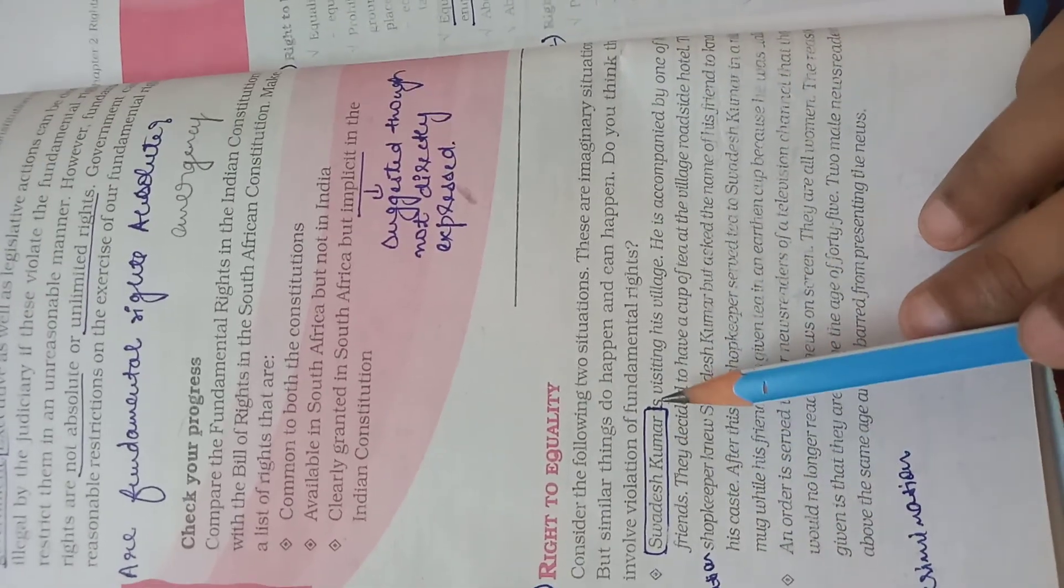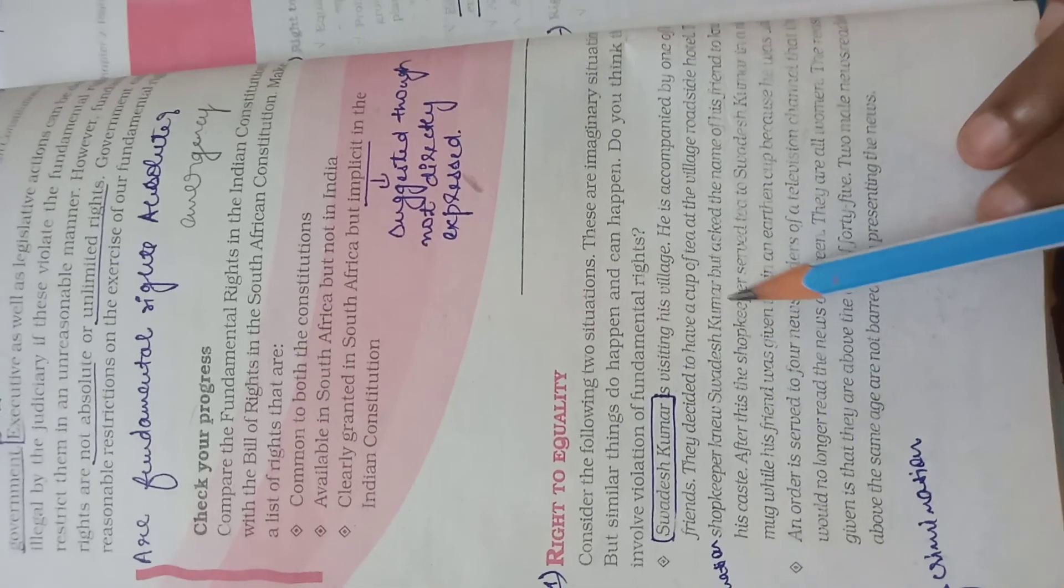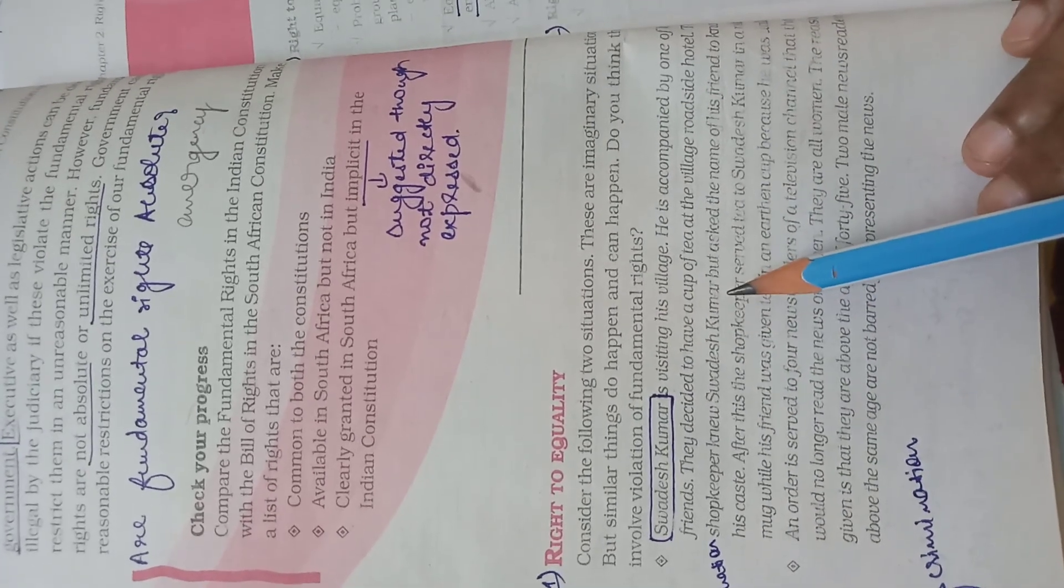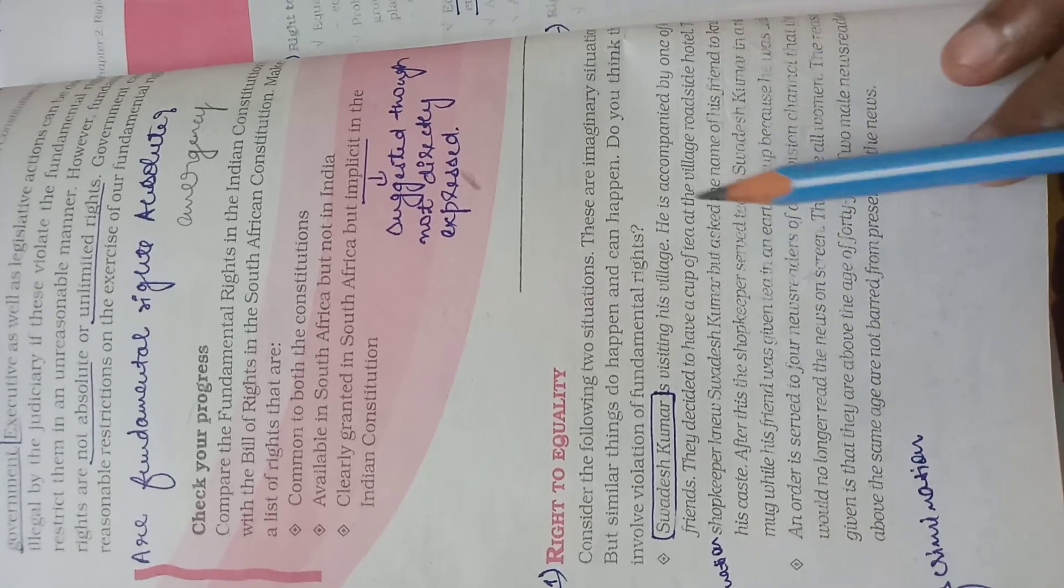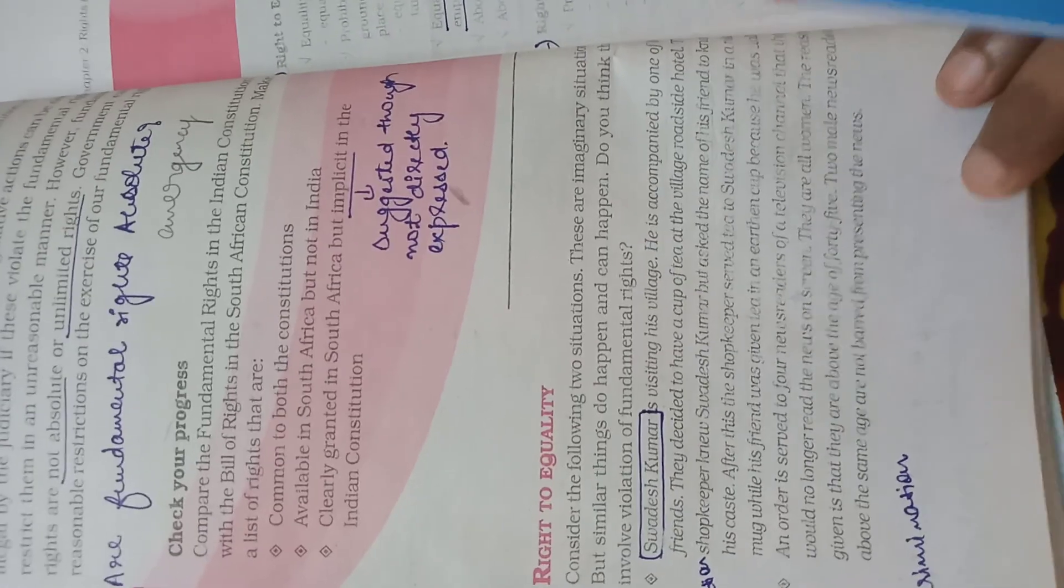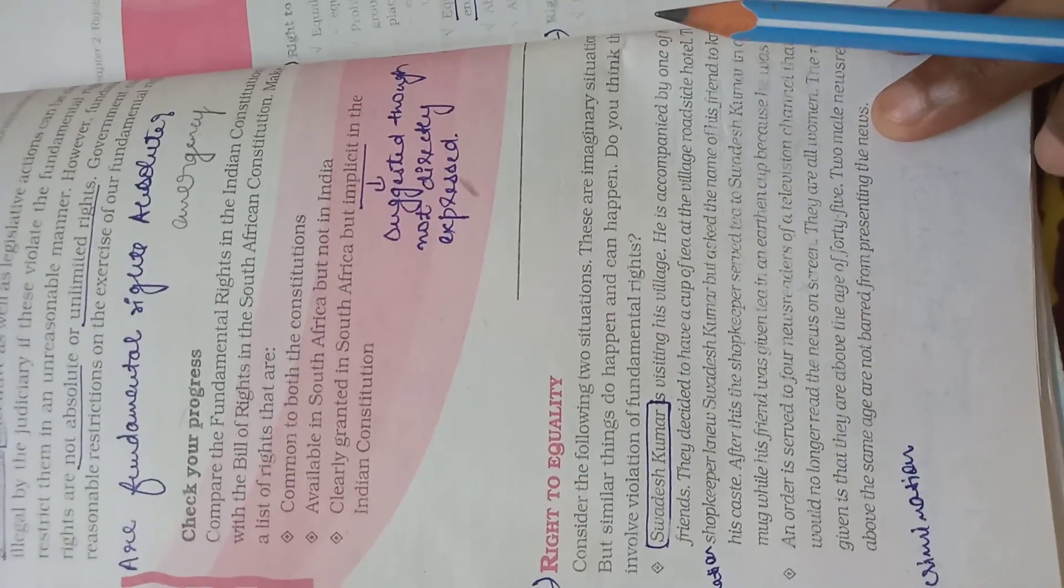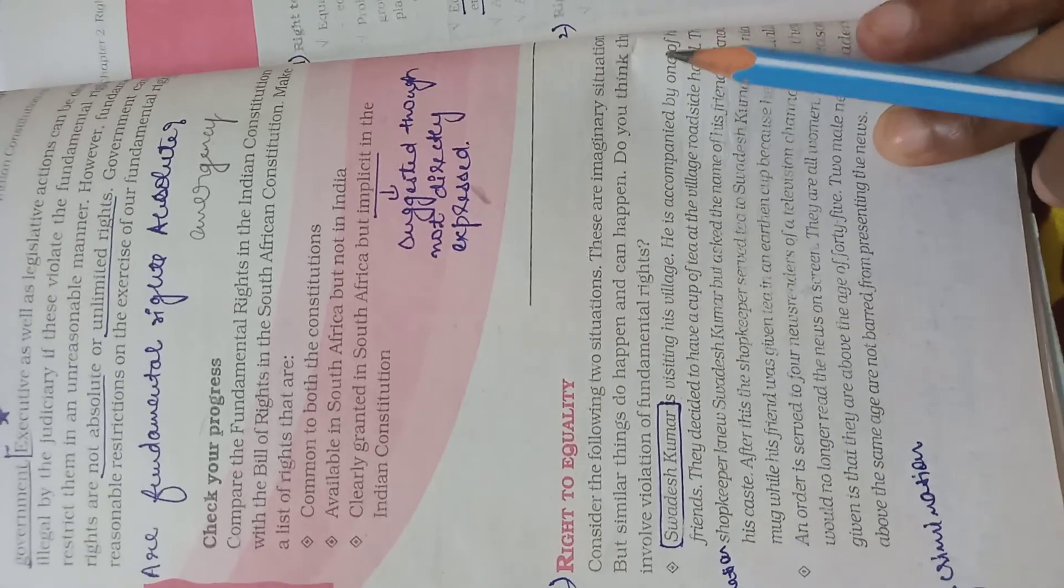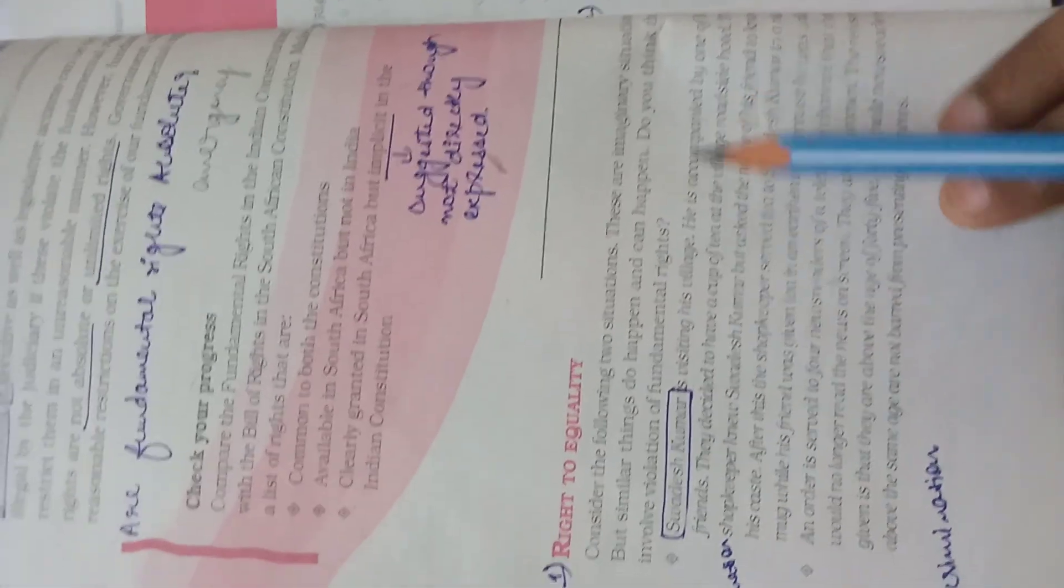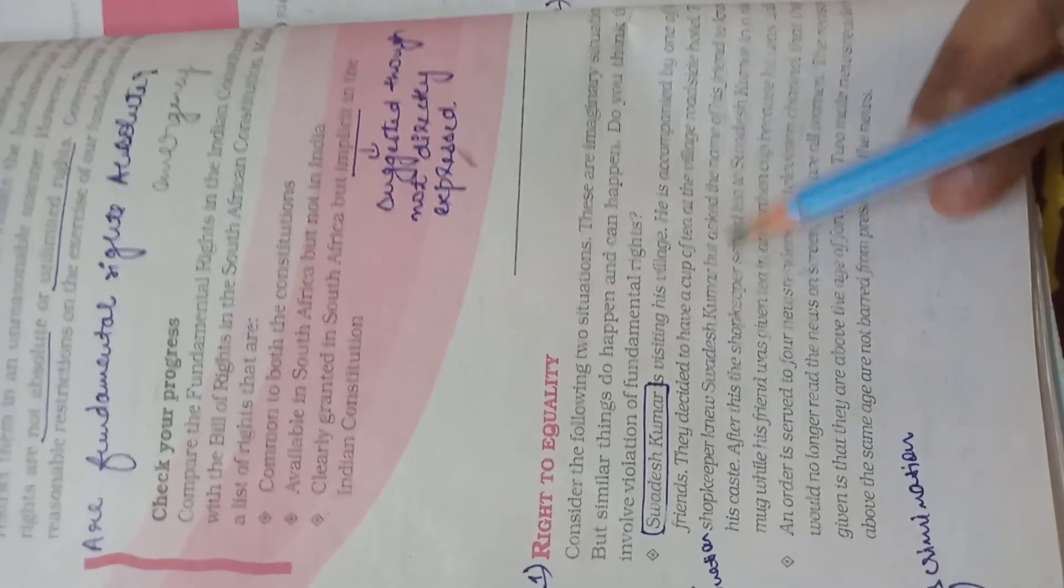What is earthen cup? Basically mitti ka jo cup hota hai, a cup made of clay. So he served it in that. Now you decide, is there a violation of fundamental rights? Yes, definitely there is a violation of fundamental rights because just on the basis of someone's name, on the basis of someone's caste, you are serving them differently.